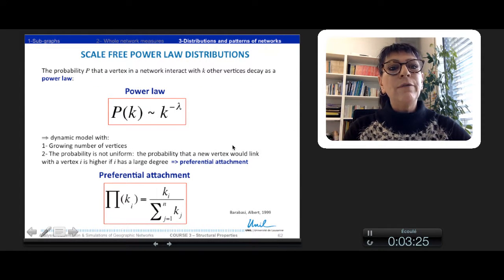And this function decays as a power-law. The dynamic model which explains the formation of this distribution is a growing number of vertices.